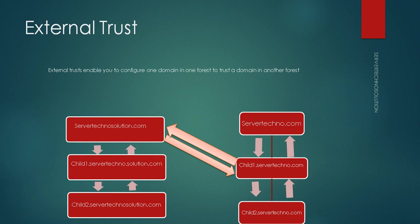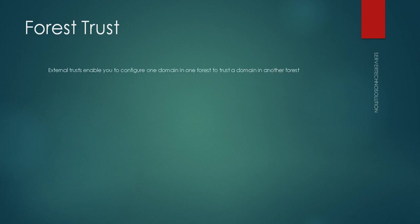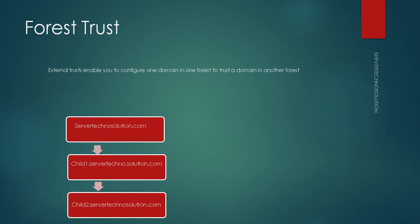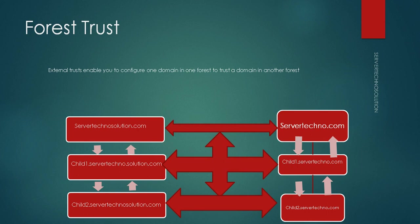Those two domains are talking to each other, but no one else is involved — that is external trust. Forest trust is somewhat similar to transitive trust between parent and child, but at the forest level. If I create a forest trust between servertechnosolution.com and servertechno.com, then all six domains in the diagram can access each other's resources. That is what we call forest trust.